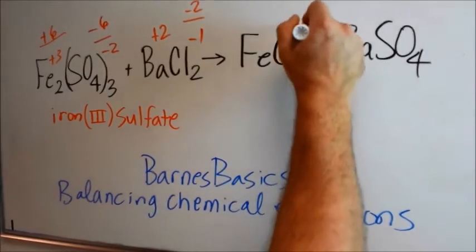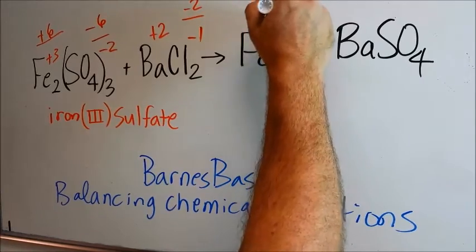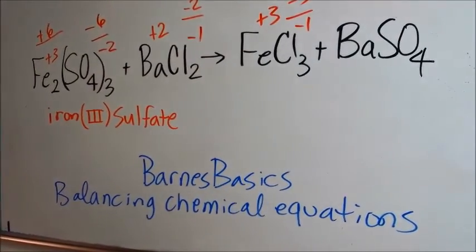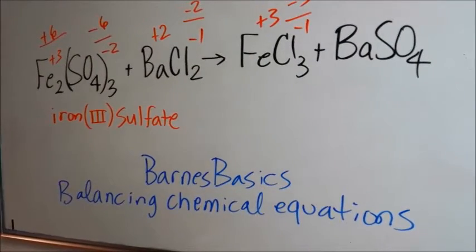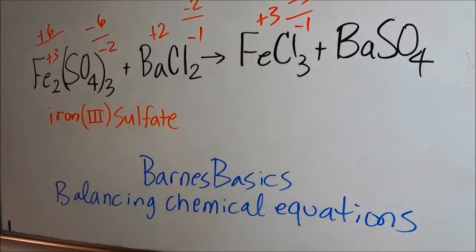Chlorine is minus 1, 3 times minus 1 is minus 3, iron is plus 3. So we have it, this is not really a redox reaction where we have changed the amount of electrons around the irons. It's an exchange reaction.